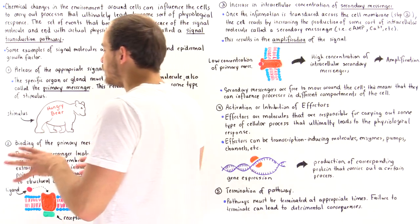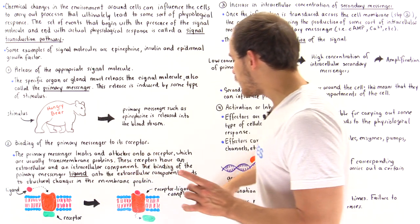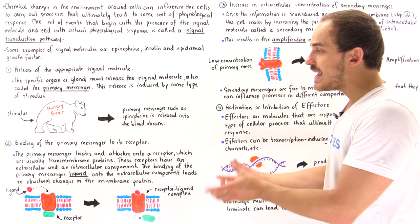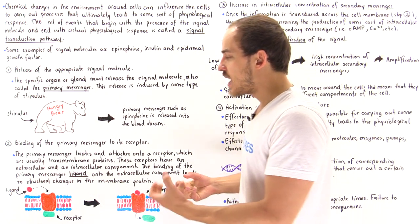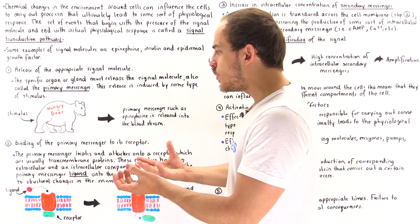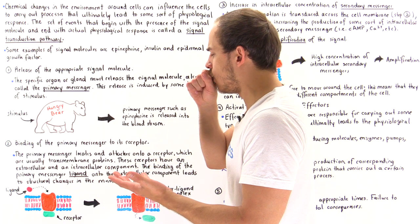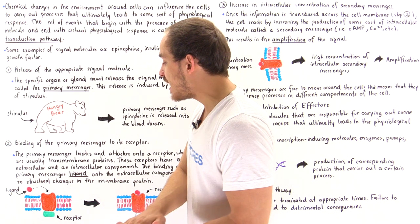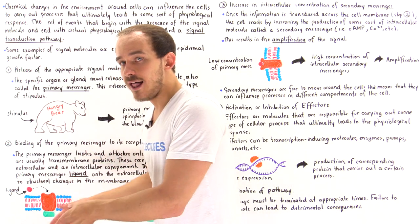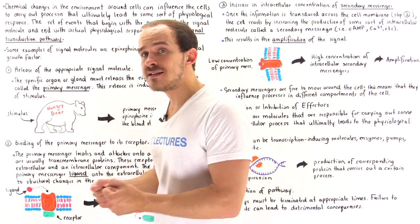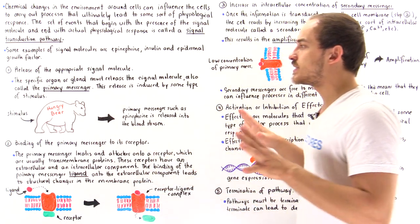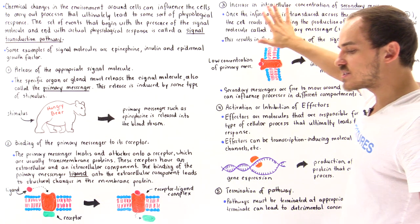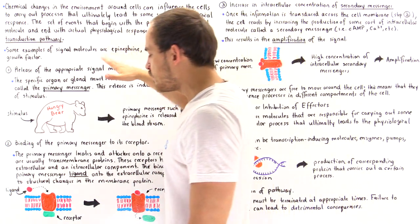This is step two: the formation of that receptor–primary messenger (ligand) complex. What happens in step two is that the message stored in the primary messenger is transduced — passed down — to that cell. Now that the binding has taken place, the cell knows to carry out specific types of processes. Once it binds, it creates a conformational change that in some cases causes a portion of that protein on the intracellular side to detach, leading to other processes as we'll see in lectures to come.